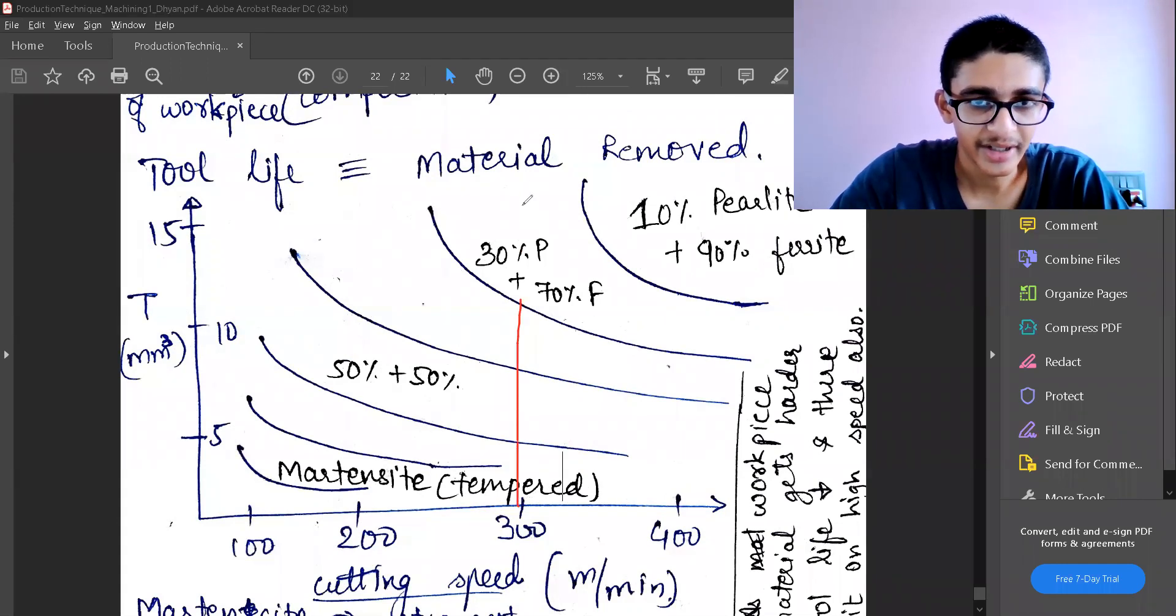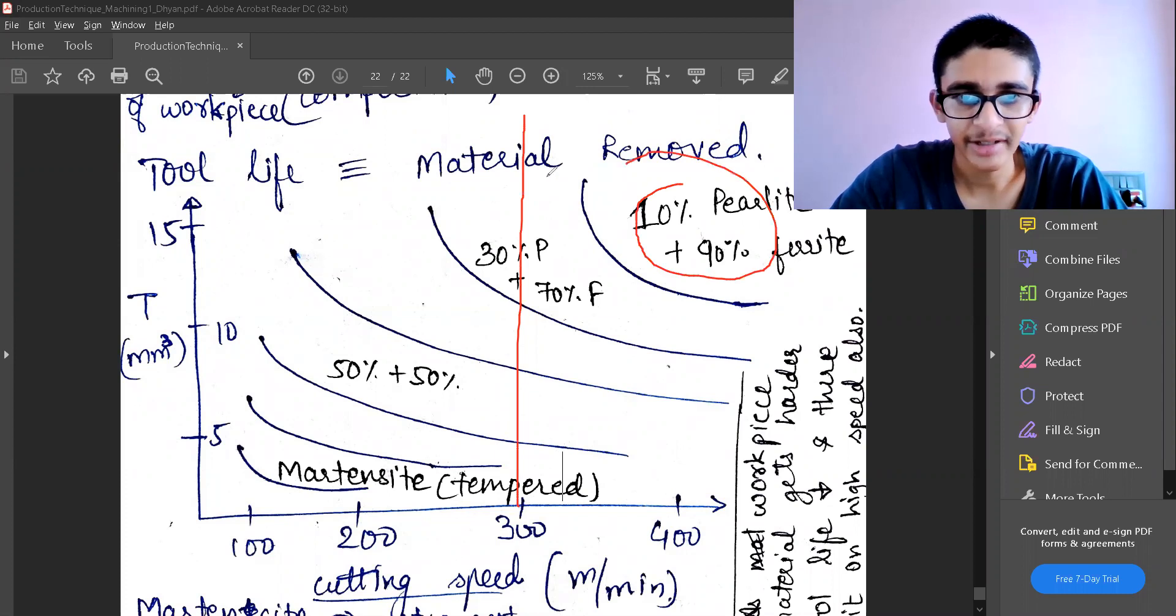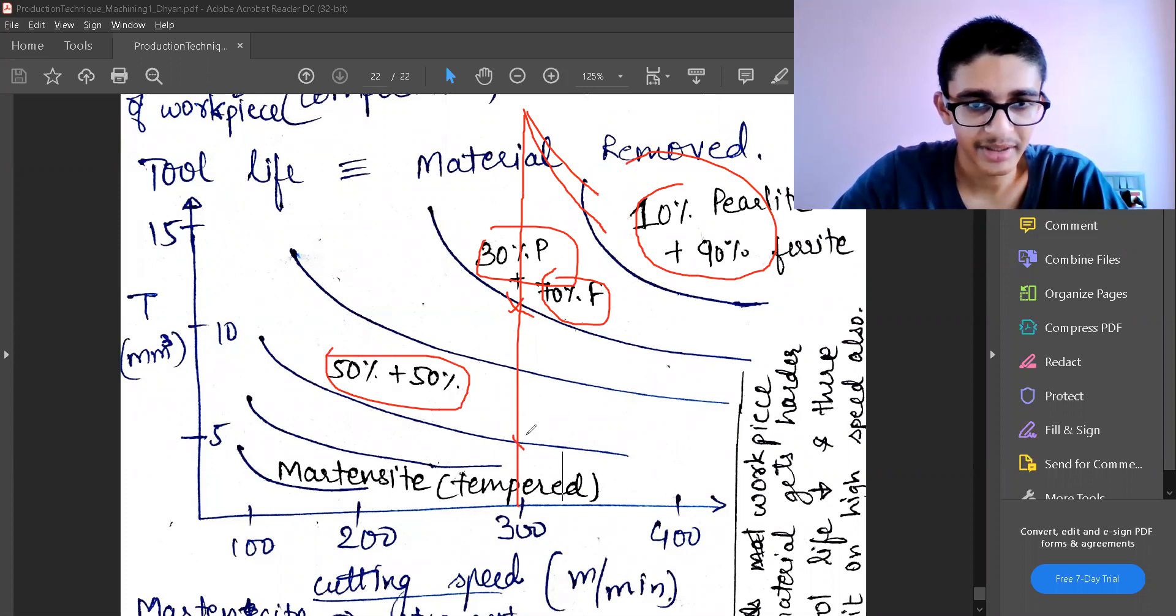Which is 300, my tool life with 10% P and 90% F is higher. Let's interpolate it like this: with 30% P and 70% F, my tool life has decreased significantly. My 50% 50% combination of ferrite and pearlite has decreased my tool life further at the same cutting speed.